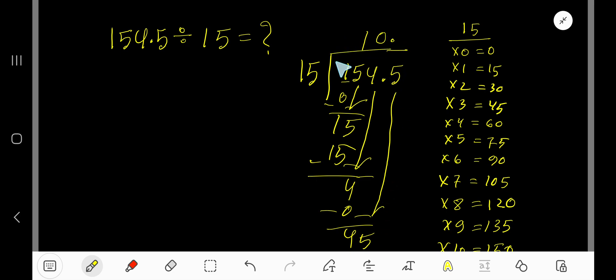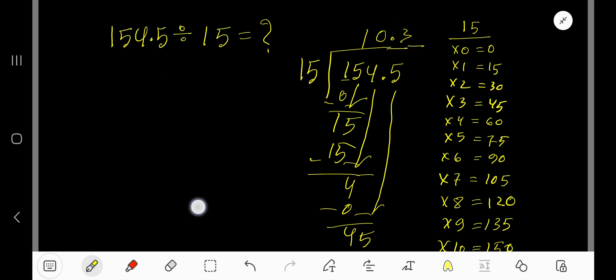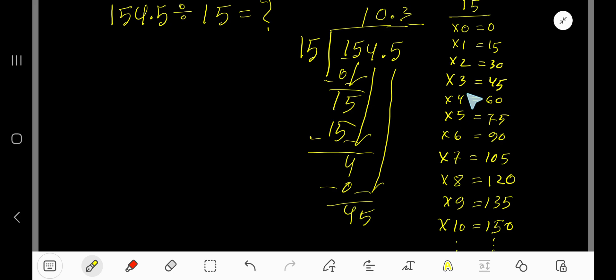The decimal must come to the quotient directly, so this 0 doesn't have any value. Now 15 goes into 45 how many times? 15 goes into 45 three times.